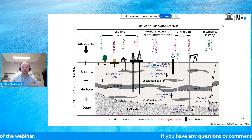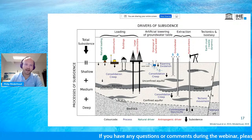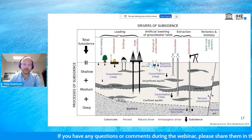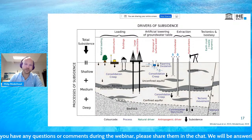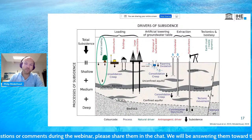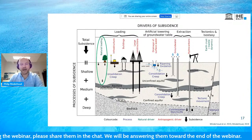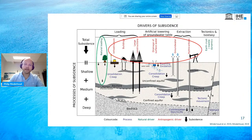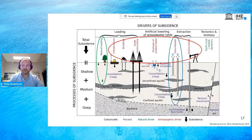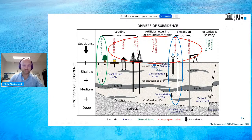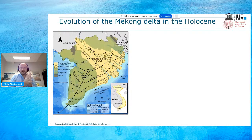I'll take you through the journey of our research and highlight three things we discovered. First, how much natural compaction is actually happening in this delta — what is the natural component? Then we looked at the impact of humans on land subsidence, zooming into the effect of groundwater extraction, because we know that can be a very notorious factor for high rates of land subsidence.